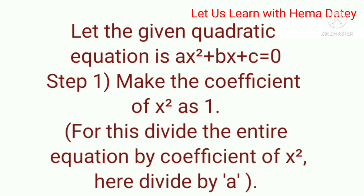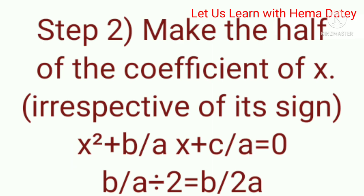Let the given quadratic equation be ax² + bx + c = 0. To solve this quadratic equation by the method of completing the square, Step 1 is to make the coefficient of x² as 1, and for this, divide the entire equation by the coefficient of x². Here the coefficient of x² is a. After dividing by a, our equation will change to x² + (b/a)x + c/a = 0.